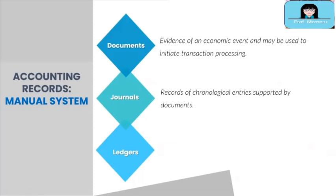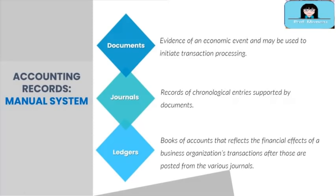Second are journals. Journals are records of chronological entries supported by documents. Special journals are used to record identical or similar transactions, such as sales recorded in the sales journal and purchases recorded in the purchases journal. Finally, ledgers are books of accounts that reflect the financial effects of a company's transactions after those are posted from the various journals. Examples are ledger accounts for cash, accounts receivable, and inventory. We also have subsidiary ledgers, which support the general ledger control accounts.